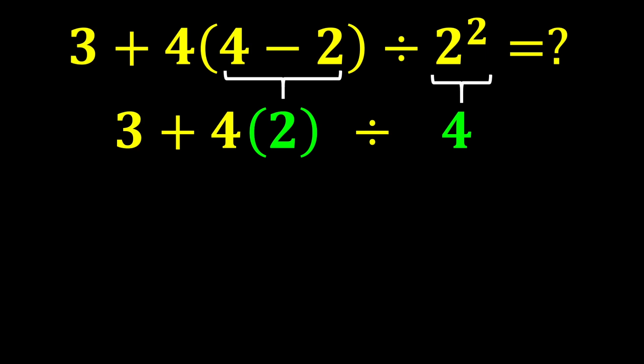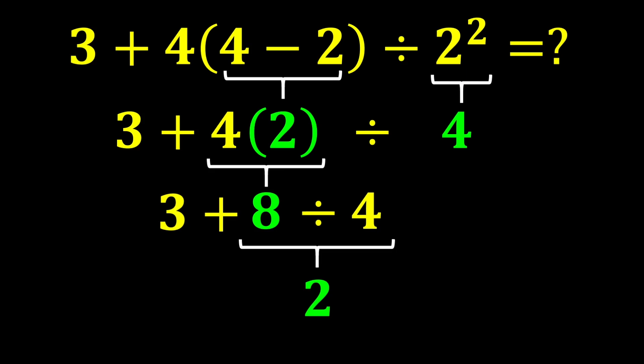In this expression, we now have an addition, a multiplication, and a division. Multiplication and division have a higher priority than addition. Since multiplication and division have equal priority, we move from left to right, calculating whichever comes first. Here, we first do the multiplication: 4 times 2 gives us 8. Then 8 divided by 4 gives 2. Finally, 3 plus 2 gives 5.